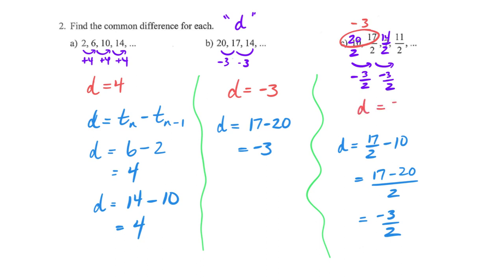Be very careful: sometimes people will zero in on the top of that fraction and see that you're decreasing by 3, and forget that it's 3 halves. So just be very careful there. We get confirmation doing the same thing — decreasing by 3 halves — so D equals negative 3 halves. Your ability to find the common difference is going to become a huge part of dealing with arithmetic sequences. Now I want to look at some problems where we're actually going to come up with the general term.